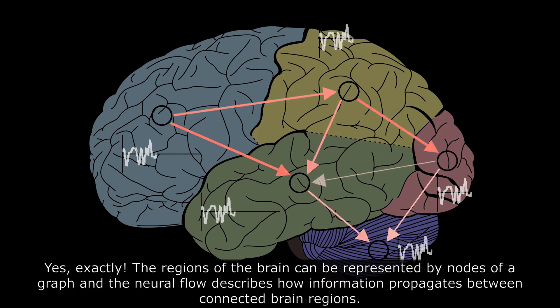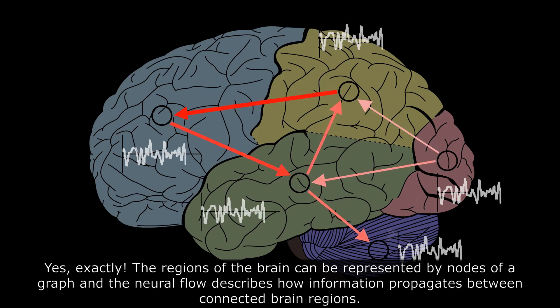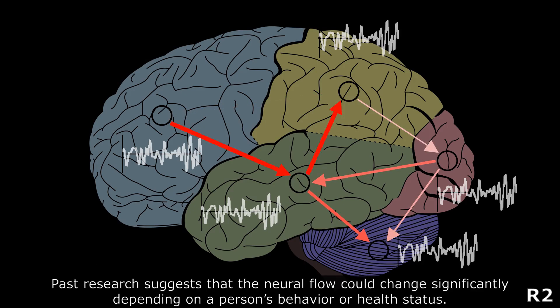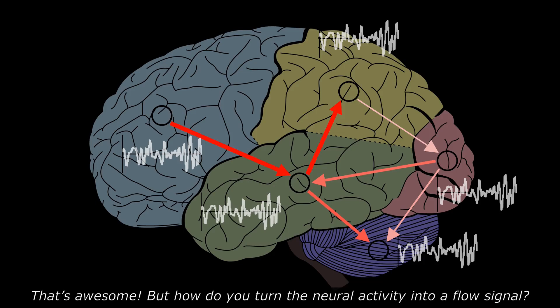The regions in the brain can be represented by nodes of a graph, and the neural flow describes how the information propagates between the connected brain regions. Therefore, the neural flow can be modeled as a signal on the edge of the graph. Past research suggests that the neural flow can be changed significantly depending on the person's behavior or health status.